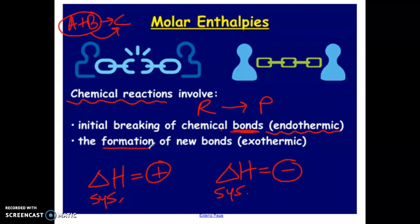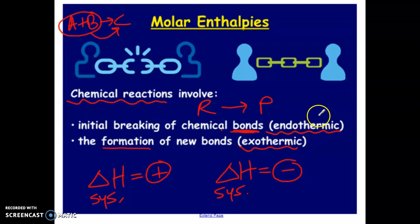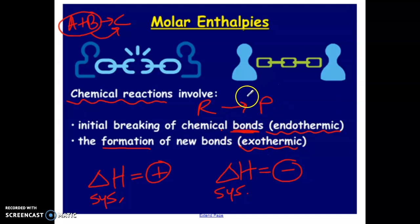To form the product bonds — the new bonds that are being made — energy is actually released from the system into the surroundings. So if we're looking at it from the system's point of view, it's an endothermic process to break the bonds and an exothermic process to create the new bonds found in the products.